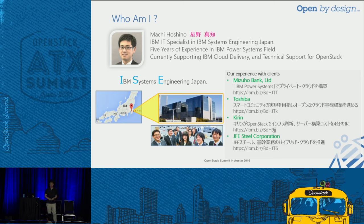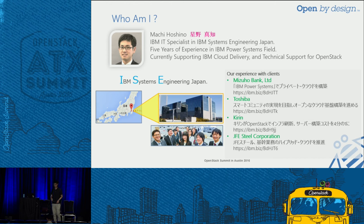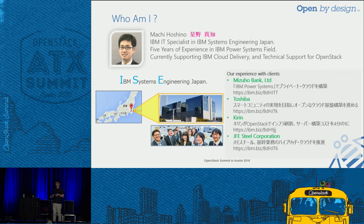I work at a company called IBM Systems Engineering Japan. We are a subsidiary of the IBM group. Usually we are called ISE in Japan, because of the first letters of IBM Systems Engineering. My company is located at a prefecture called Chiba, which is actually close to Tokyo. I put a picture of the building that I work at and the colleagues that I work with.